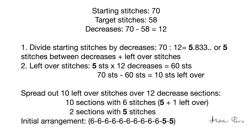Here is the summary of the calculations. The starting stitches are 70, the target stitches are 58. 70 minus 58 equals 12 decreases. Next we divide starting stitches by decreases: 70 divided by 12 equals 5.833. We round it down to 5 stitches between decreases plus leftover stitches. To calculate the leftover stitches we multiply 5 stitches by 12, which gives us 60 stitches. Our starting stitches were 70, so 70 minus 60 equals 10 — that's 10 leftover stitches.